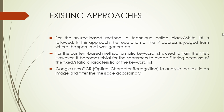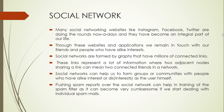Google also uses optical character recognition to analyze the text in an image and filter the message accordingly. Now I will talk about social networks, which is the main modification to the existing Bayesian technique of spam filtering. Social networking websites like Facebook have been an integral part of our lives. Through these websites we remain in touch with friends and people who have alike interests. Social networks are extensively formed by graphs with millions of connected links, and can help form communities with people who share alike interests or disinterests. Pushing spam reports over the social network can help in training the spam filter, as dealing with individual spam mails can be very cumbersome.